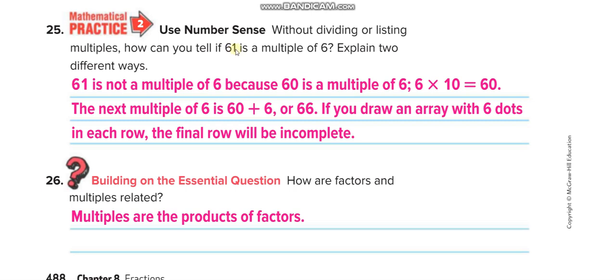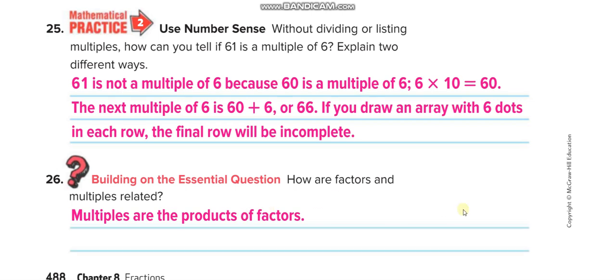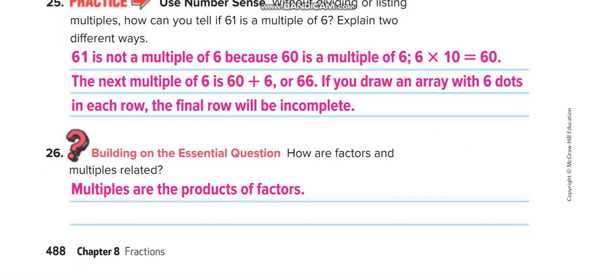To tell if 61 is a multiple of 6 without dividing: 6 times 10 is 60, and 6 times 11 is 66 — 61 is in between, so no, it is not a multiple of 6. How are factors and multiples related? Multiples are the product of factors. Product means the answer of multiplication — when you multiply two numbers, the answer is the product. So multiples are the product of factors.